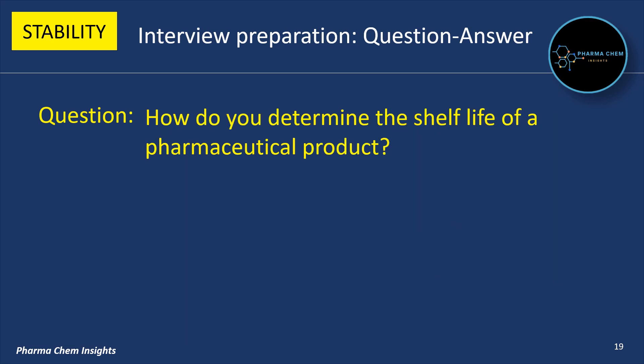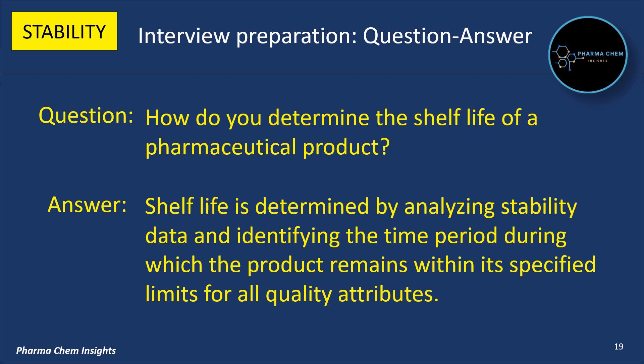Next question: How do you determine the shelf life of a pharmaceutical product? Shelf life is determined by analyzing stability data and identifying the time period during which the product remains within its specified limits for all quality attributes.